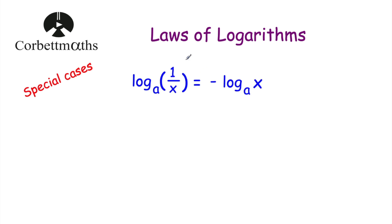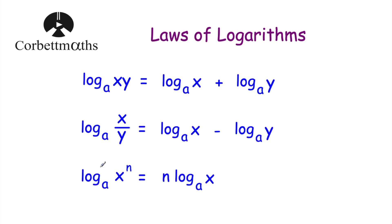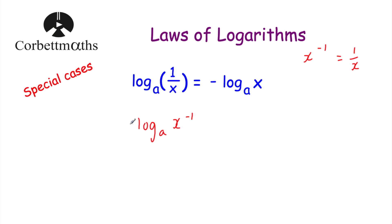Our last special case is log base a of 1 over x is equal to minus log base a of x. If we consider 1 over x, well x to the power of minus 1 is the same as 1 over x. So instead of writing log base a of 1 over x, I'm going to write log base a of x to the power of negative 1. Then, thinking back to our third law of logarithms — log base a of x to the power of n, where you bring down the power — if we bring down this power of minus 1, that gives minus 1 times log base a of x, or just minus log base a of x.